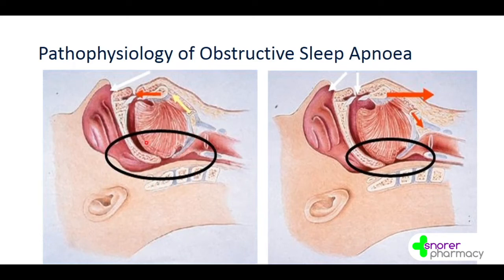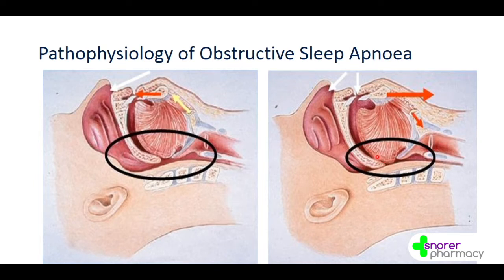What we're looking at here is the body of the tongue falling back and occluding the airway, along with the uvula and the soft palate. The epiglottis is in there as well. On the normal side versus this side, it's fallen back — it occludes the airway or at least restricts it such that it causes an arousal.